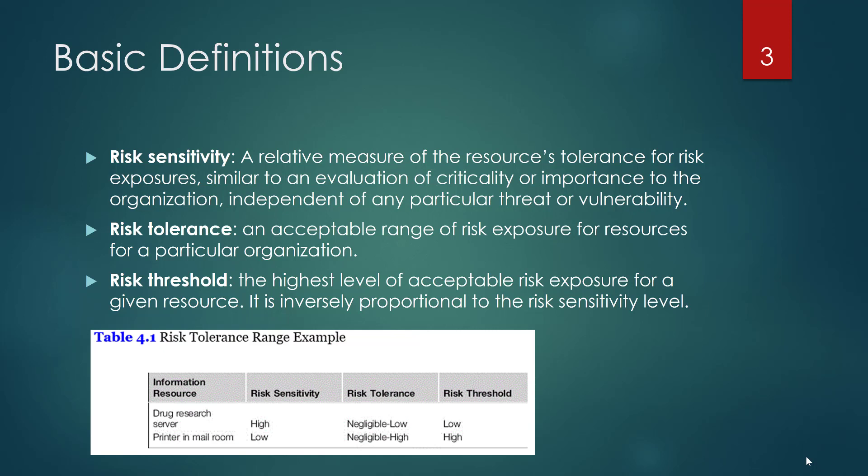Whatever the highest value of that risk tolerance is going to be, that highest value is going to be your risk threshold. So as you can see, for the drug research server the tolerance is low and the threshold is low. For the printer, the tolerance is high and the threshold is high — they're related to each other.